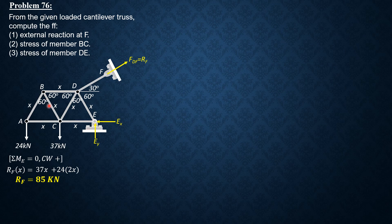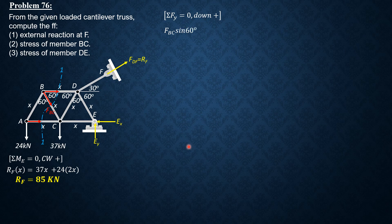For member BC, using method of sections we consider all forces to the left of section 1-1. The forces involved are FBD (horizontal), FBC (the required force), and FAC. We sum up forces Y so only FBC is the unknown. Summation of forces Y equals zero, downward positive: FBC sine 60 plus 24 equals zero. Therefore FBC = negative 27.71 kilonewtons, or FBC = 27.71 kilonewtons compression.